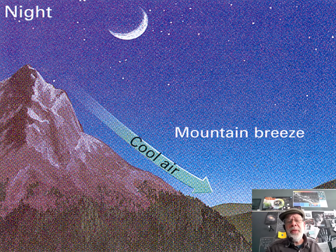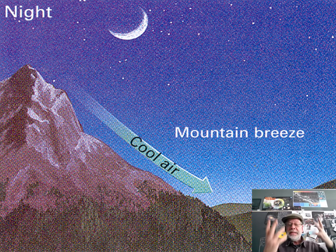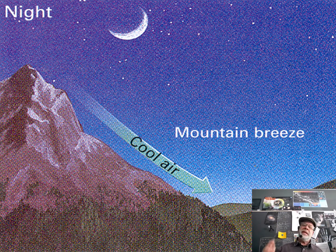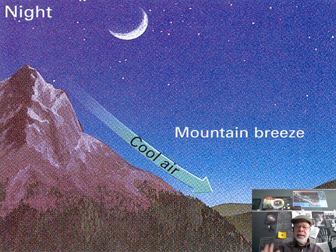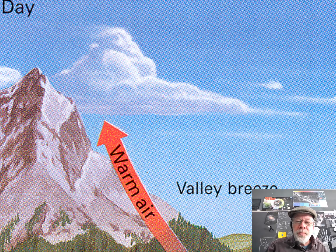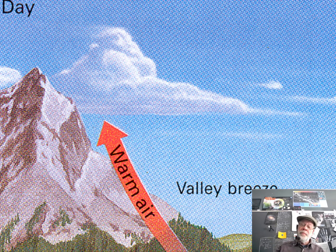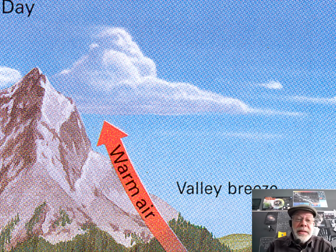A mountain breeze is the same thing. At night, the mountain gets colder, it radiates its heat to space — at least if it's a clear night. It radiates all its heat to space, and the air starts tumbling down the side of the mountain, making these mountain breezes. During the day, on a hot day, the mountain is getting very warm and the hot air in contact with the mountain starts rising. You could see the air being pulled up from the valley — thus a valley breeze.